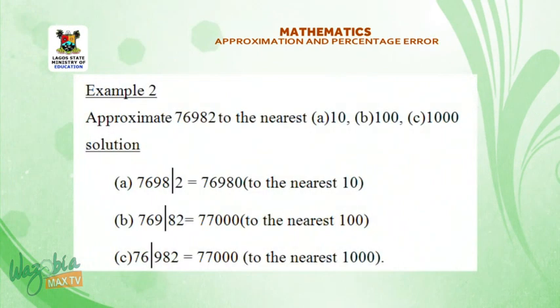Example 2. Approximate 76982 to the nearest A, ten, B, hundred, C, one thousand. Solution A, 76982 is equal to 76980 to the nearest ten. B, 76982 is equal to 77000 to the nearest hundred. C, 76982 is equal to 77000 to the nearest one thousand. Let's go on a short break.